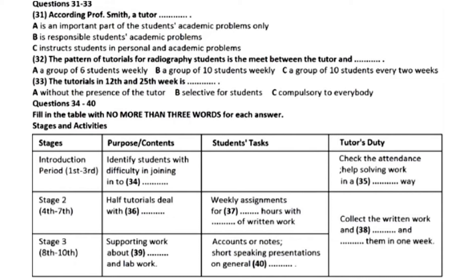The third stage starts from week 8 till the 10th. During this period, math and four core physics programs are included. The majority of tutorial time should be devoted to work which supports the lecture programs and laboratory work. At least 60% of homework assignments should involve written work. The assignment may involve writing an account of, or notes on, a specified range of topics. The written work should also be marked and graded.